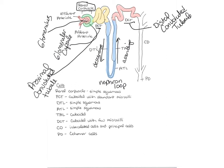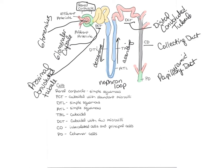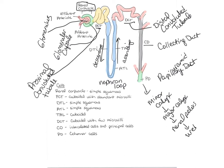The distal convoluted tubule empties into the collecting duct. Several nephrons will have their distal convoluted tubules draining into the collecting duct. At the end of the collecting duct is a papillary duct, located at the tip of the pyramid. The papillary duct drains into the minor calyx, which drains into the major calyx, which drains into the renal pelvis, then into the ureter, then to the urinary bladder, then to the urethra, and then out of the body.